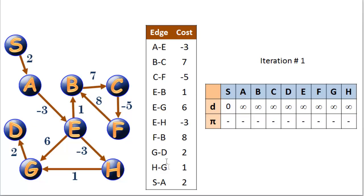So we're going to need 9 iterations, starting with iteration number 1. We're going to relax all these edges 9 times. Edge A to E with a cost of negative 3 — our cost to get to A is already infinity, so adding negative 3 to that is not going to help us. From B to C with a cost of 7 — our cost to B is already infinity. In fact, looking through all the edges, all of these are not going to make any difference because the only vertex with a cost of 0 is S.